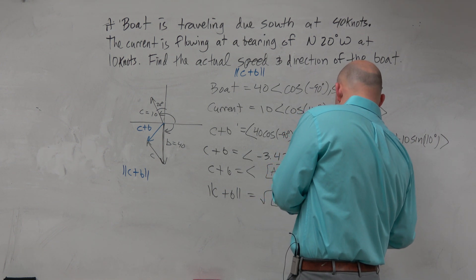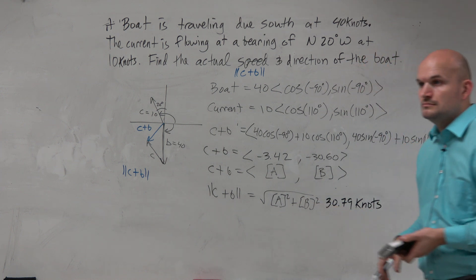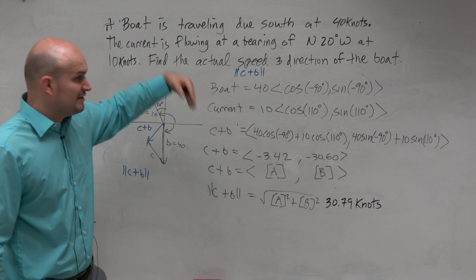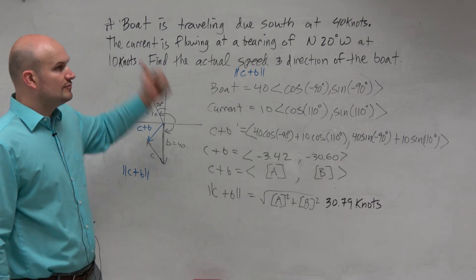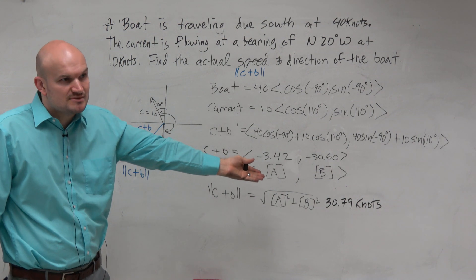And I didn't tell you how to round, so let's just round to the nearest hundredth. But, does that make sense? You're traveling at 40 knots, but then you have wind flowing at 10, the other opposite direction. So 30.79 sounds about right. Correct?